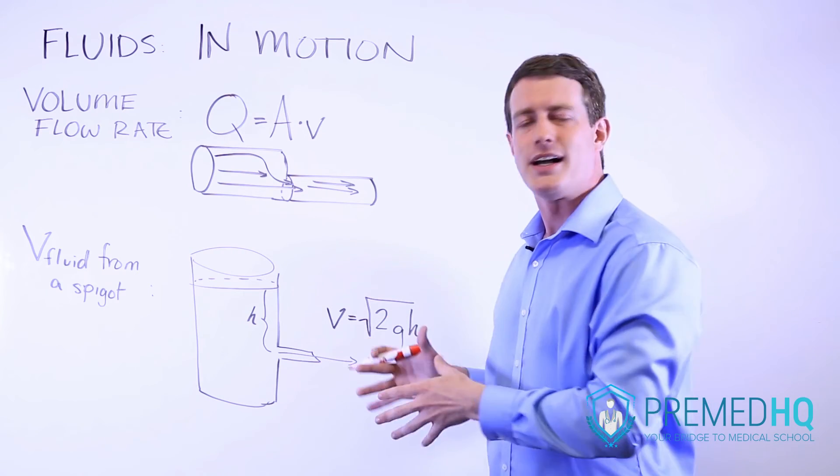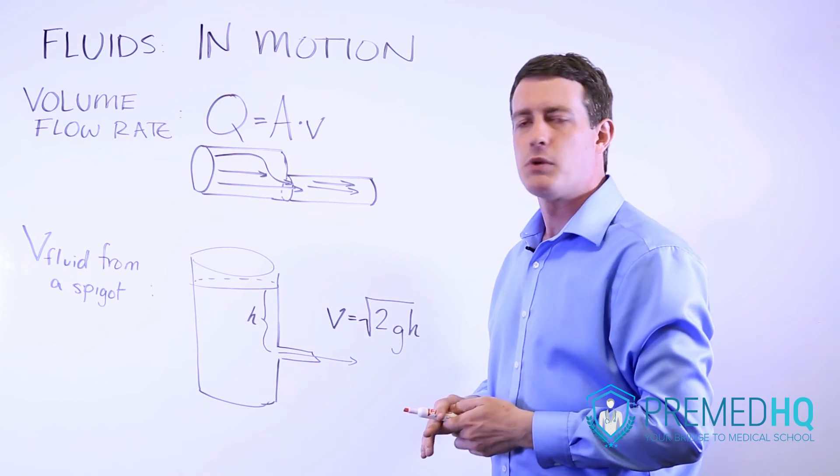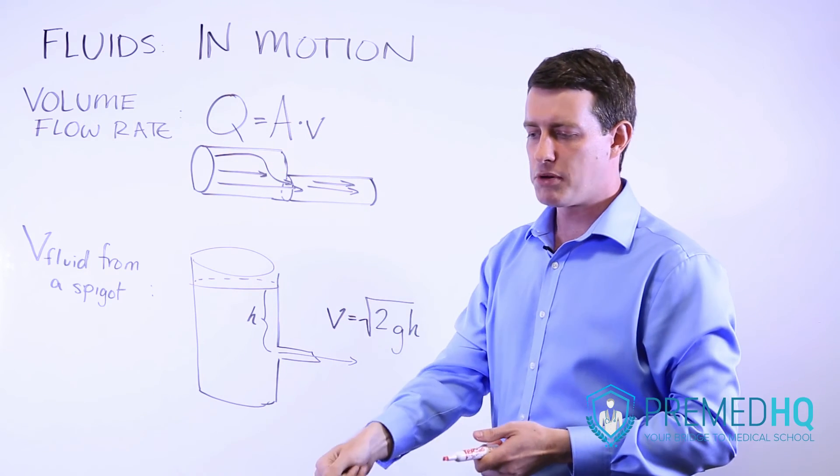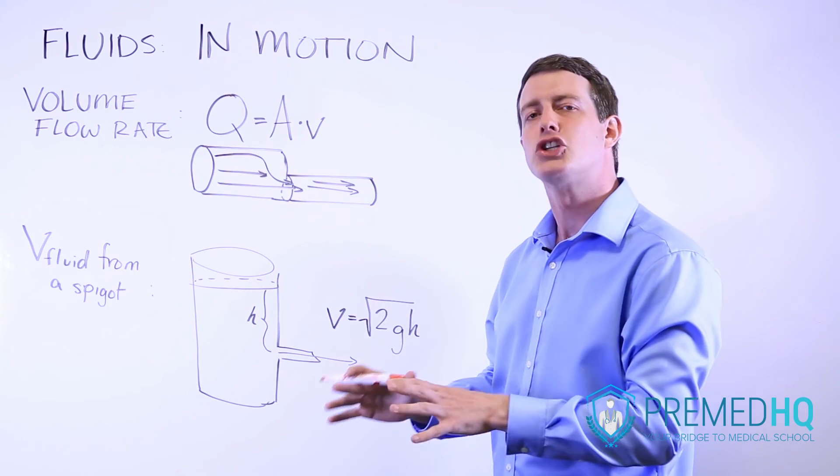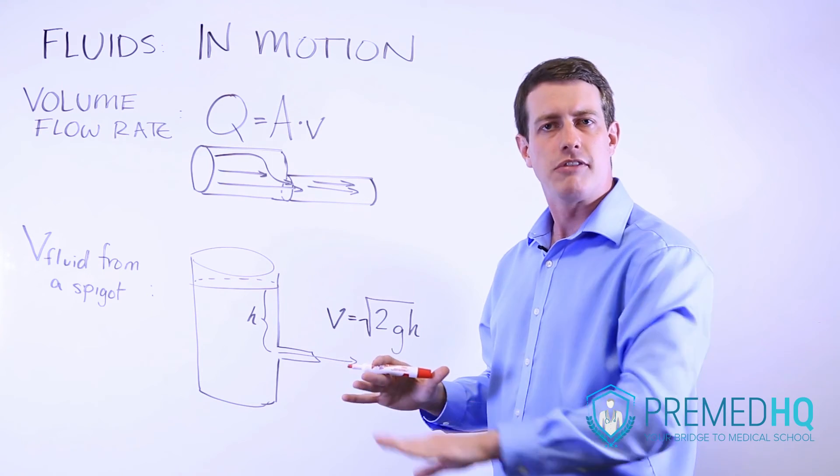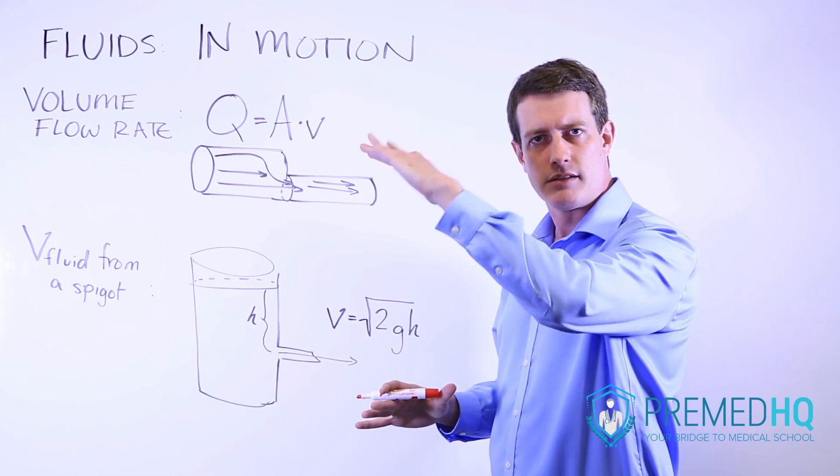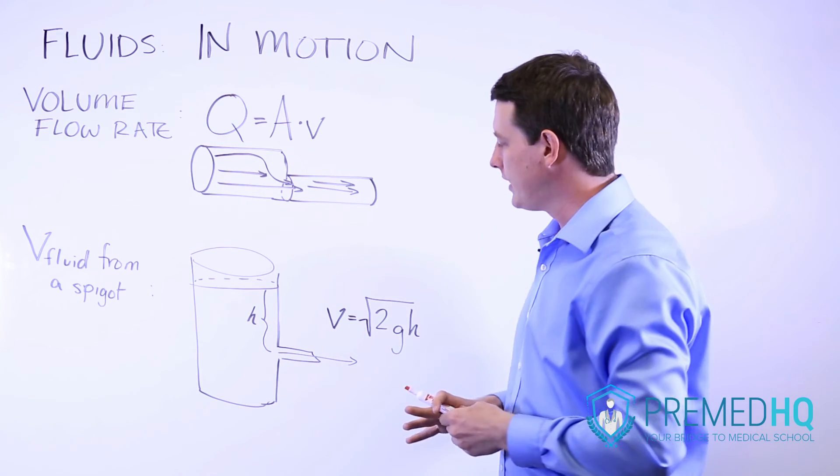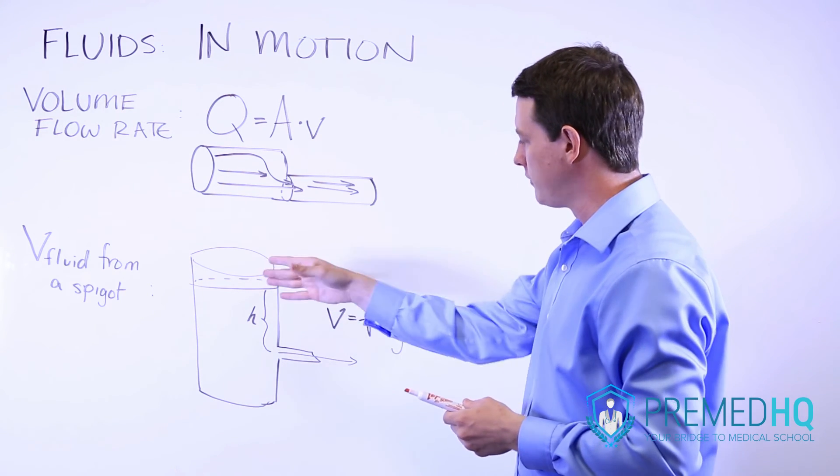So you may have seen an application of this, perhaps with one of those beverage dispensers with a lot of beverage in it, and you press the button on the spigot, and initially it flows out very rapidly, but as the beverage gets depleted, it starts to travel more and more slowly. And that is an application of this, the velocity of fluid from a spigot.